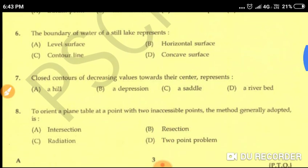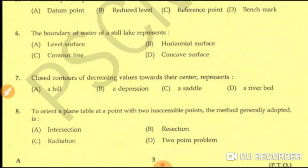Question number six: the boundary of water of a still lake represents — option A: a level surface, option B: a horizontal surface, option C: a contour surface, option D: a concave surface. The correct answer is contour line, so option C is the correct answer.